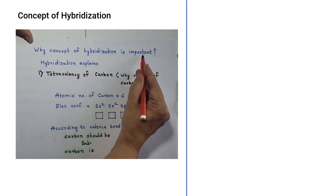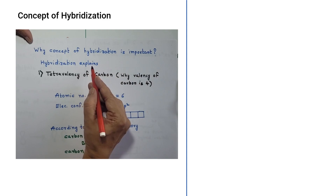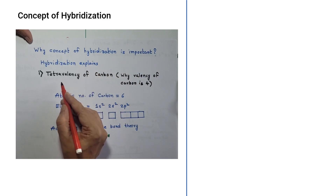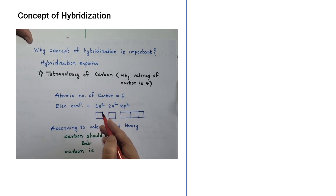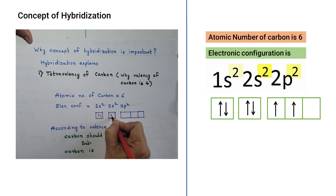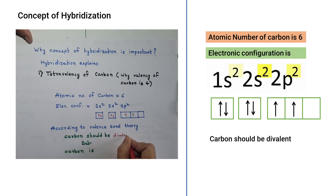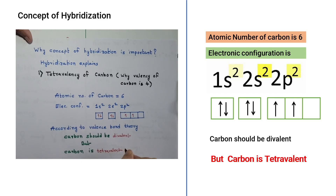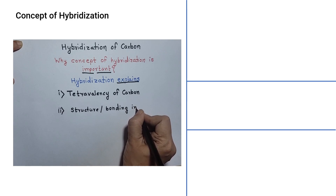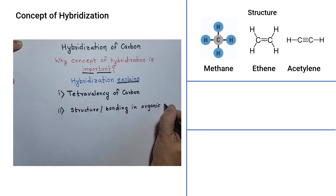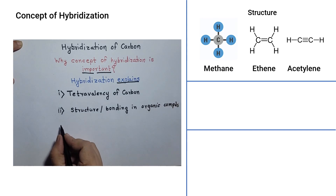Before we talk about what hybridization is, we should know why the concept of hybridization is important. Hybridization explains certain things about organic compounds. The first thing it explains is the tetra-valency of carbon — why the valency of carbon is 4. The electronic configuration of carbon is 1s2 2s2 2p2, meaning there are two unpaired electrons in the 2p orbital. According to valence bond theory, carbon should be divalent, but in practice carbon is tetravalent. This tetra-valency of carbon can be explained on the basis of hybridization.